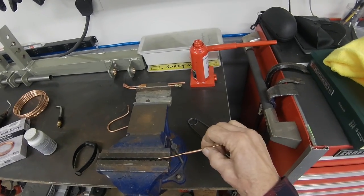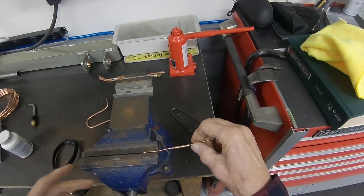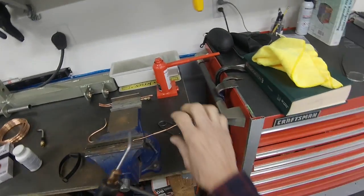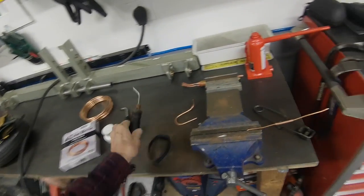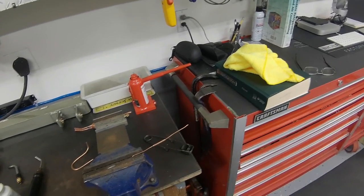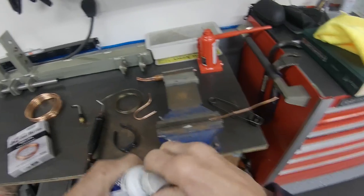In a situation like this, I would use a small tip. So I'm going to use my number three tip to solder that together and it's going to be a much neater job. So we'll put a little flux on there.